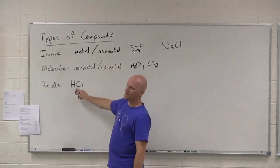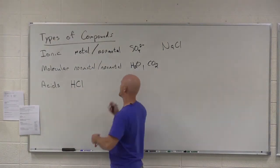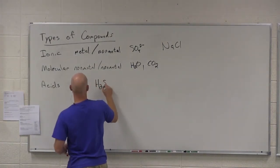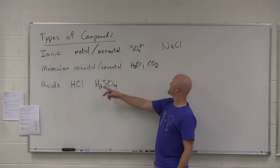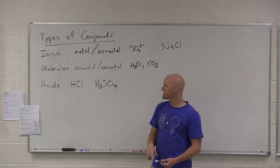So here's what we call a binary acid. It's made of just hydrogen and one other element. But the other kind of acids we have are what we call oxoacids or oxyacids. And they're just the acids of some of those polyatomic ions that contain oxygen.